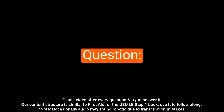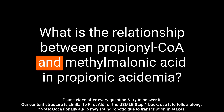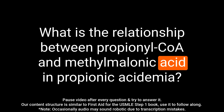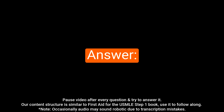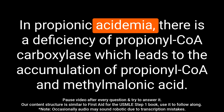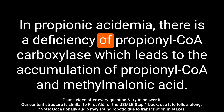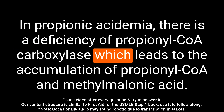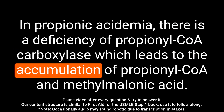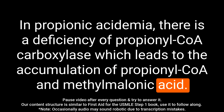Question: What is the relationship between propionyl CoA and methylmalonic acid in propionic acidemia? Answer: In propionic acidemia, there is a deficiency of propionyl CoA carboxylase which leads to the accumulation of propionyl CoA and methylmalonic acid.